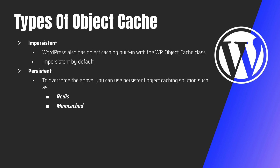To sum it up: by default WordPress has object caching, but it's not persistent — data is lost when the next page request comes in. To make it persistent, we use solutions such as Redis and Memcached so the data can be retrieved from persistent storage on subsequent requests. Rather than keeping data on your own server, you use a dedicated caching server. In the next video we'll talk about how to implement caching in WordPress.